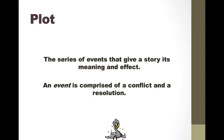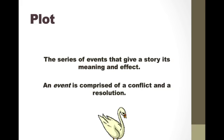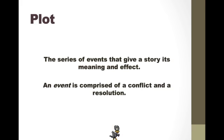Our next element of fiction would be plot. A plot is the series of events that give a story its meaning and effect. An event is comprised of a conflict and a resolution. With your plot line, there has to be some sort of meaning for your character to be there, so usually they're going to have some sort of conflict — some sort of problem or trouble is going to come up for your character or characters.